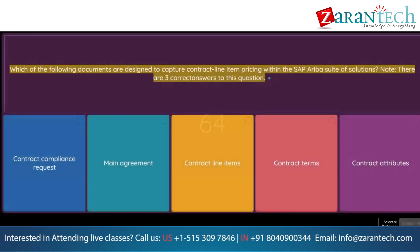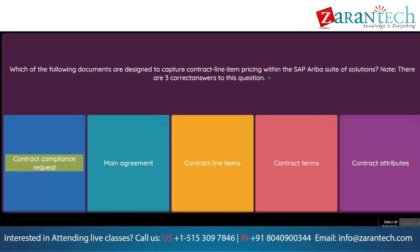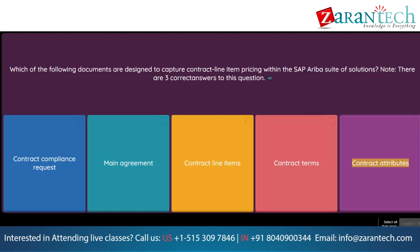Question: Which of the following documents are designed to capture contract line item pricing within the SAP Ariba suite of solutions? Note: there are three correct answers. Option 1: Contract compliance request. Option 2: Main agreement. Option 3: Contract line items. Option 4: Contract terms. Option 5: Contract attributes.